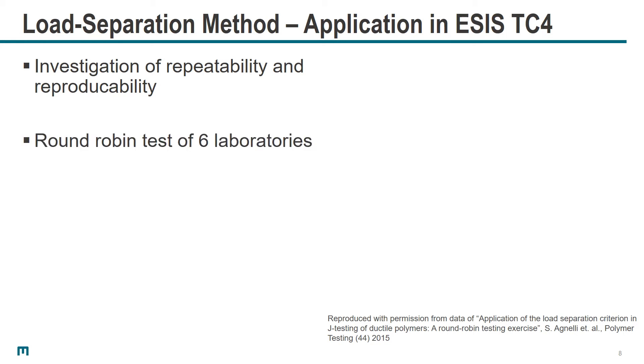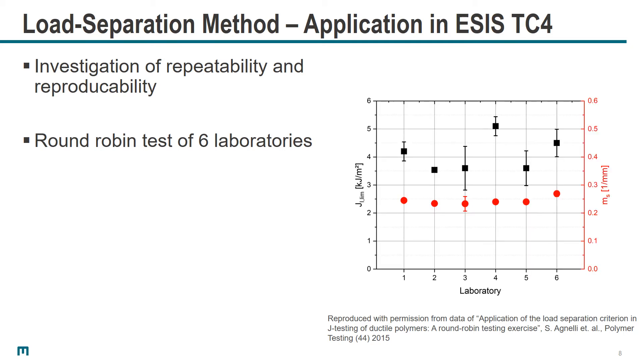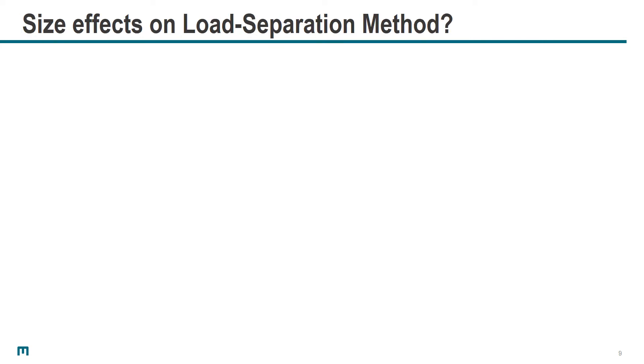Therefore, ESIS started a round-robin test with results from six laboratories comparing MS and J_1 Lim values. As we can see, the reproducibility and repeatability is quite alright, especially for MS which gives a very high degree of reproducibility and repeatability, whereas J_1 Lim also gives quite similar results but is more prone to scattering.